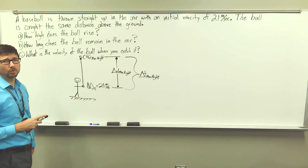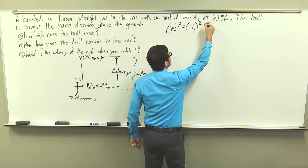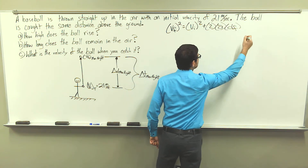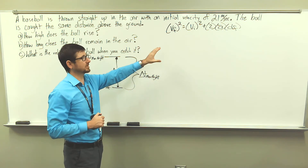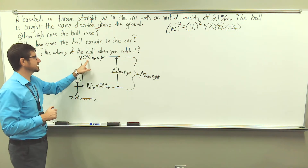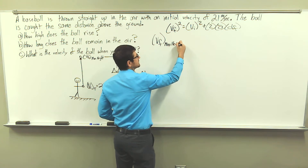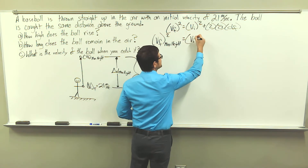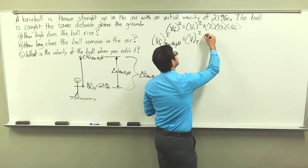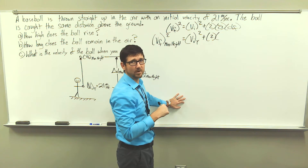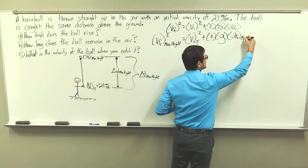For Part A — how high does the ball rise? — we're going to use the kinematic equation: final velocity squared equals initial velocity squared plus 2 times acceleration times displacement. I'll adapt this to our situation: v sub f at max height squared equals the initial velocity in the y direction squared, plus 2 times the acceleration due to gravity g, multiplied by the final displacement to maximum height.